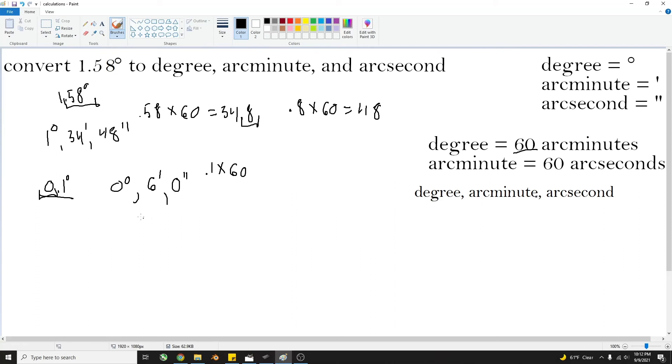And I have another example. We'll just keep on going. We got 24.1. Now for this one, we're just going to do the same thing. We're going to take the 24, keep that as the degrees. Take the 0.1, multiply it by 60.